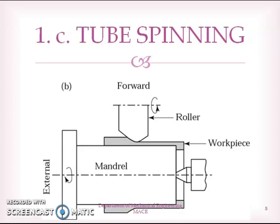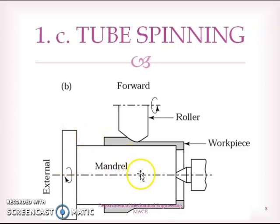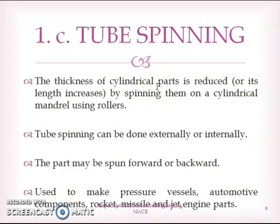Another category of spinning operation is tube spinning. In tube spinning, the thickness of a cylindrical part is reduced and the length is increased by spinning the cylindrical part over a mandrel using a roller. You can see in the figure — there is a mandrel, and over the mandrel you place a cylindrical workpiece, then apply pressure using a roller. As you apply pressure and move the roller forward, the thickness of the cylindrical part is reduced and the length is increased.